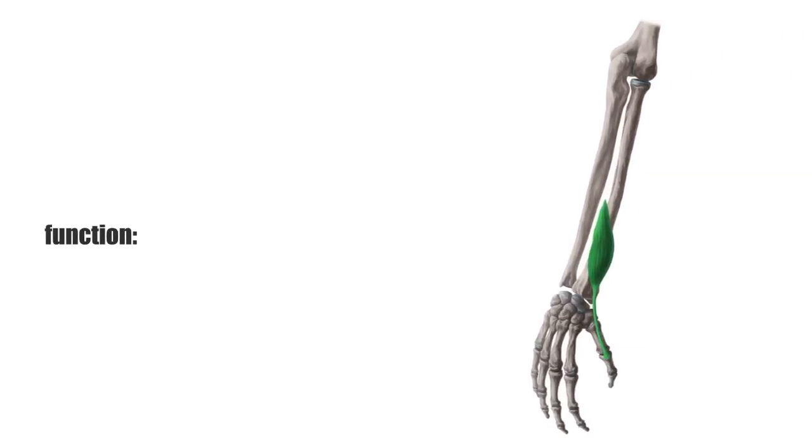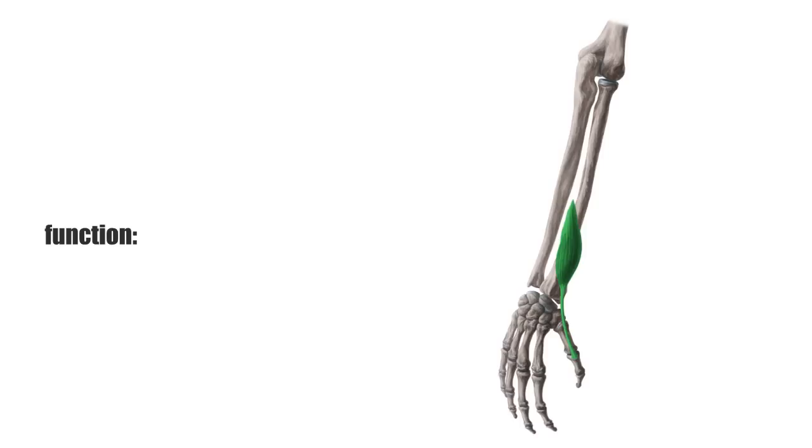The main function of the deep extensors is to move the joints of the hand and fingers. The extensor pollicis brevis extends and abducts the thumb in the saddle and at the metacarpophalangeal joints, which also leads to a radial deviation at the wrist.